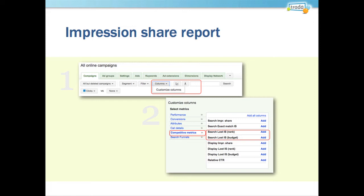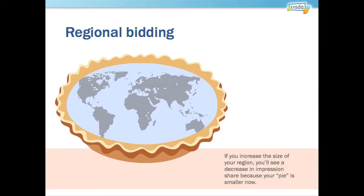The two that are the most valuable to look at, especially if you're just getting into Impression Share, are the search lost Impression Share rank and the search lost Impression Share budget. These are the two we suggest you start with. Impression Share shows you the slice of the pie — the amount of the pie that you are able to get.